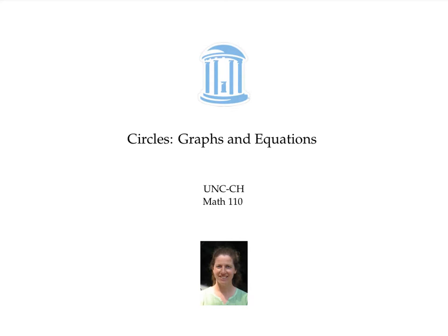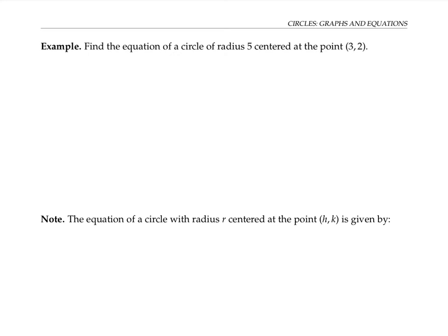This video is about graphs and equations of circles. Suppose we want to find the equation of a circle of radius five, centered at the point three, two — it'll look something like this. For any point x, y on the circle, we know that the distance of that point x, y from the center is equal to the radius, that is five.